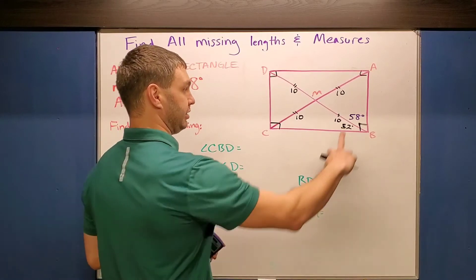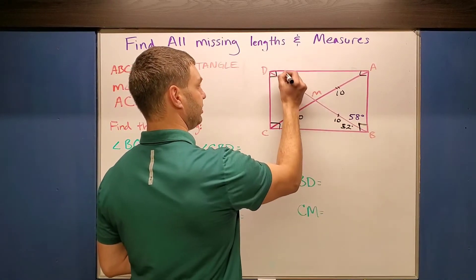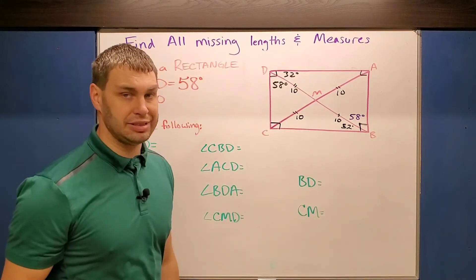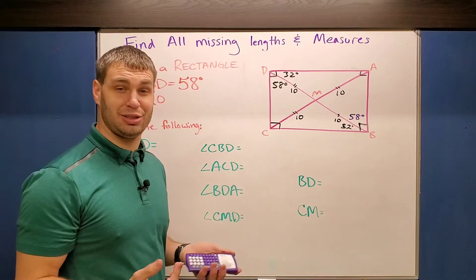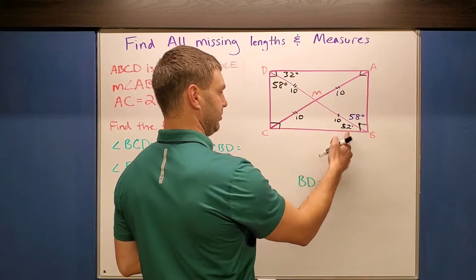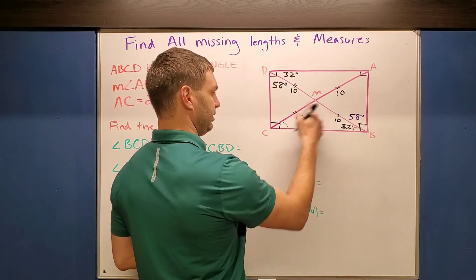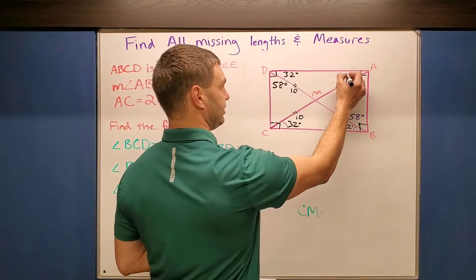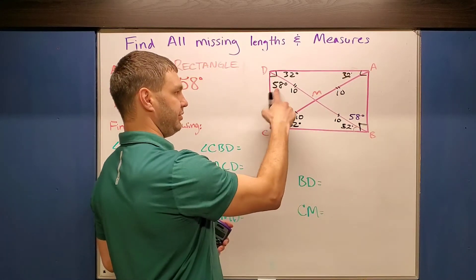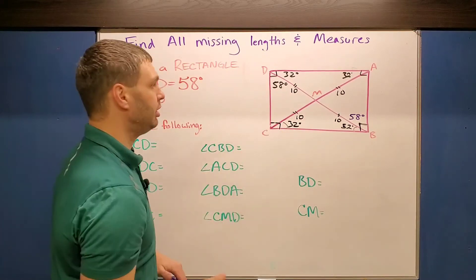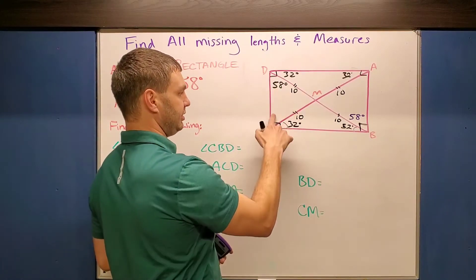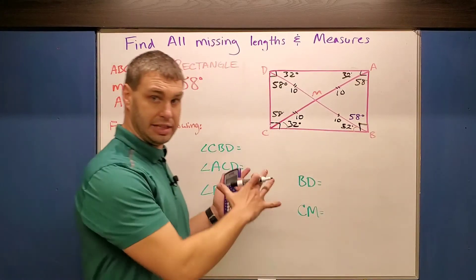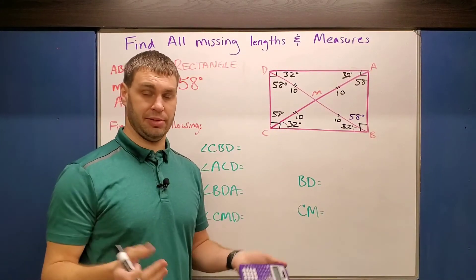Then I have alternate interior angles, so I can flip those over: this becomes 32 degrees, and this becomes 58 degrees. We also have isosceles triangles. If this is 32 down here, this angle on the bottom triangle also has to be 32 degrees, and similarly 32 up here. Then if this is 58 on the left side, that triangle is also isosceles, so down here this is also 58 and same thing up here — 58 degrees. I haven't done any of the problems yet, but I know I'll probably use some of these facts.